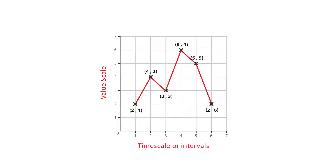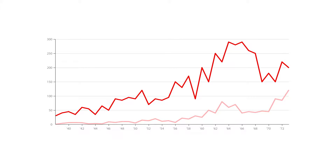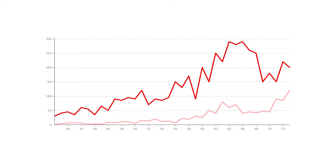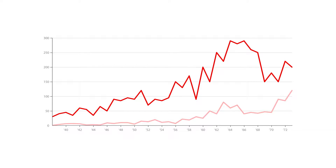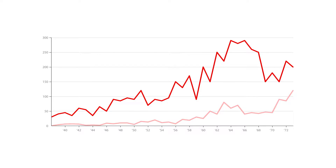Negative values can be displayed below the x-axis. The direction of the lines on the graph works as a nice metaphor for the data — an upward slope indicates where values have increased and a downward slope indicates where values have decreased. The line's journey across the graph can create patterns that reveal trends in the dataset.